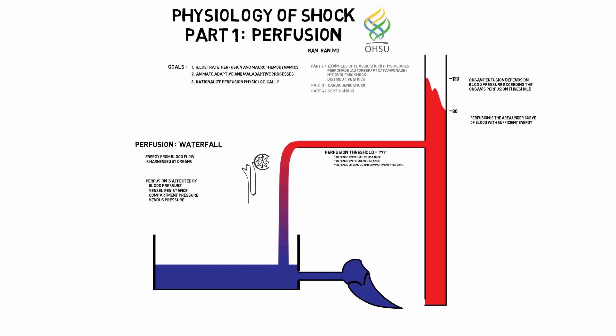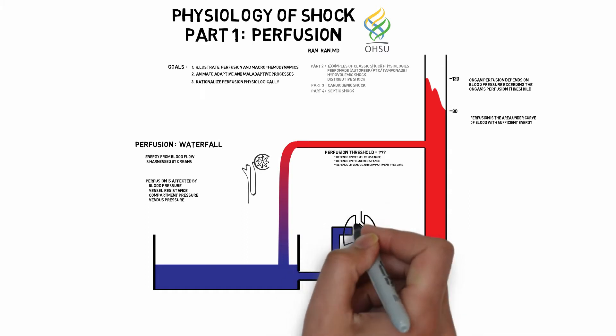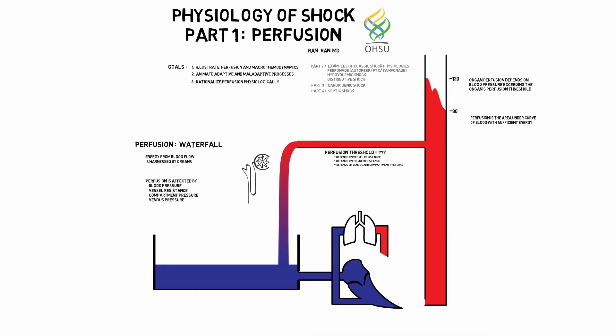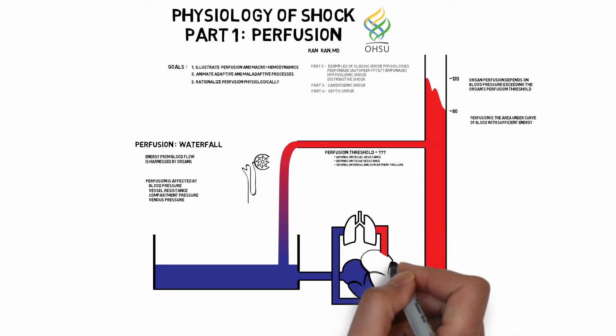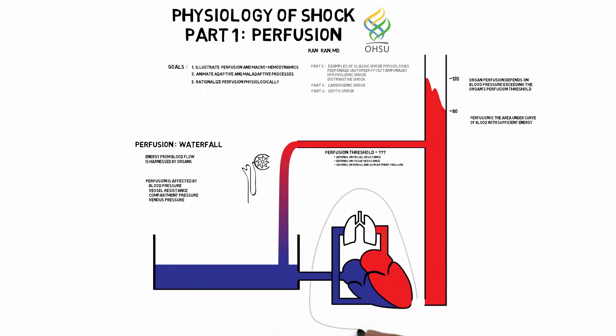Each heart has a different preload, afterload, and contractility, though there is obviously much interdependence. Pulmonary artery. Lungs. Gas exchange occurs. Pulmonary veins. Left heart. All of this sits in the thoracic compartment with a highly variable pressure, which you can think of as a form of thoracic compartment pressure that is frequently negative. And then the circle is complete.